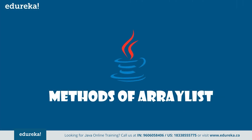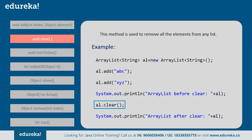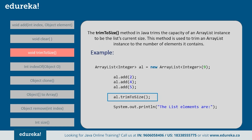Now let's dive into the various methods supported by ArrayList. The first is the add() method, which is used to add elements to the ArrayList — specifically, to insert a specific element at a specific position index in the list. You can create an ArrayList and keep adding elements using the add method. Next is the clear() method. This method is used to remove all elements from the list — you can simply call clear() to remove all elements present in the list.